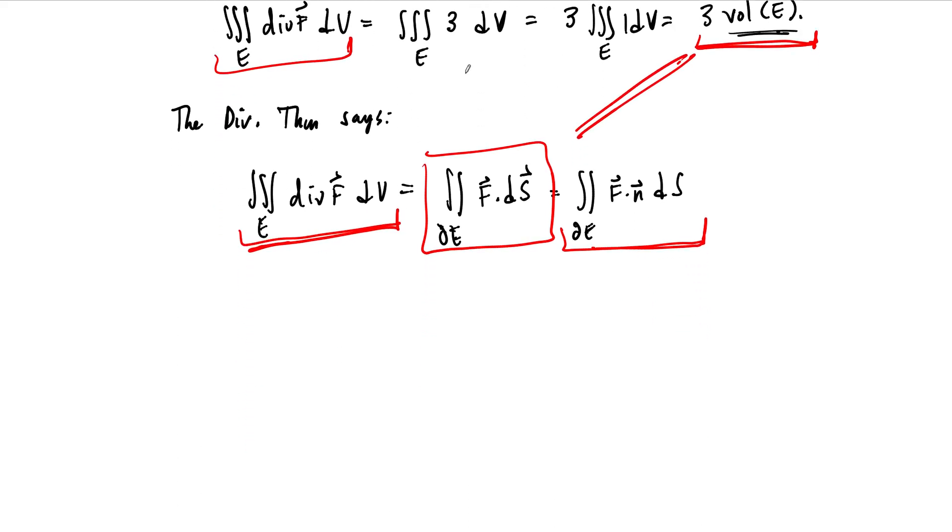And so we end up with, basically, just by a little symbol manipulation, we get that the volume of our region E can be computed as one-third times the boundary integral, the flux integral of f dotted with dS. So that's the flux. And here it's very important that this vector field f is just the component-wise x, y, z.